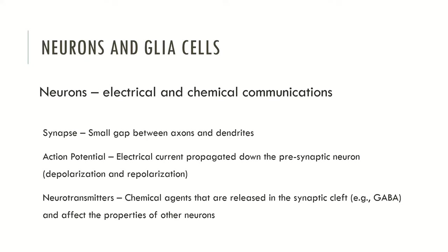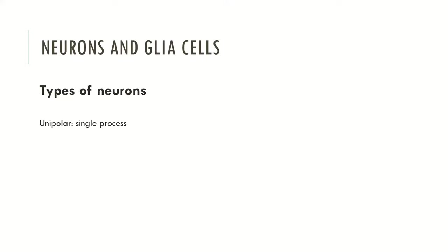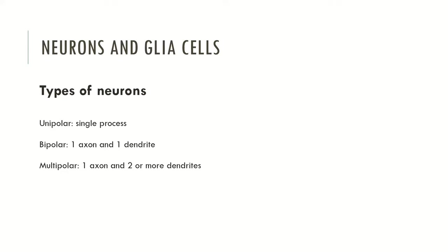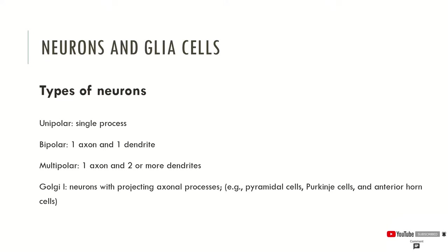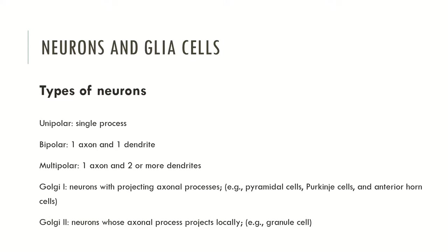An action potential is an electrical current propagated down the presynaptic neuron through depolarization and repolarization, allowing communication between neurons. By the action of these potentials, neurotransmitters are released in the synaptic cleft — chemical agents that affect the properties of other neurons. There are different types of neurons: unipolar (single process), bipolar (one axon and one dendrite), multipolar (one axon and two or more dendrites), Golgi-1 neurons with projecting axonal processes such as pyramidal and Purkinje cells, and Golgi-2 neurons whose axonal processes project locally, such as granule cells.